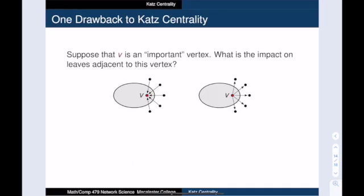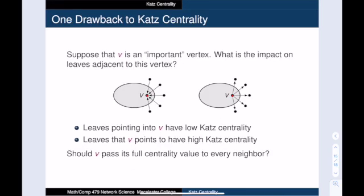Now let's talk about one drawback to Katz centrality in a digraph. Suppose that a vertex V is important, and let's consider a bunch of leaves linked to this vertex. What happens if the leaves point towards V? And what happens if the leaves point away from V? Pause the video and think about what their Katz centrality scores would be. Alright, let's talk about the leaf conundrum of Katz centrality. Leaves that point towards V have low Katz centrality. That makes sense since no vertex is pointing at them. But what about leaves that V points towards? These leaves get credit for all of V's importance, even though they are peripheral to the network. One way to fix this is to change our update rule so that V does not pass along its full centrality value to each of its neighbors.